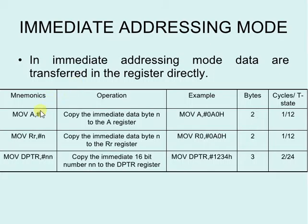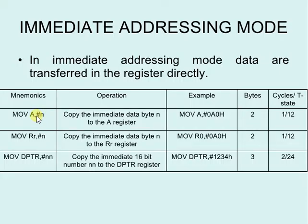Here is one instruction — it will copy the immediate data byte N to the A register. The '#' symbol represents immediate data. So if '#' is present in any instruction, it indicates that it is immediate data.